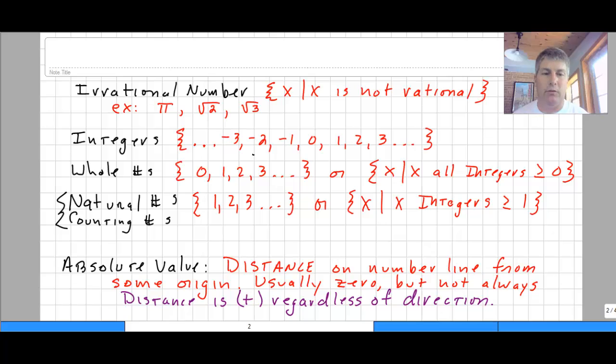Absolute value. The concept of absolute value is distance. Absolute value is distance on a number line from some particular origin. Usually that origin is zero, but not always. Keep in mind, absolute value is distance. And it doesn't matter the direction. You can be moving in the positive direction on the number line or the negative direction on the number line.